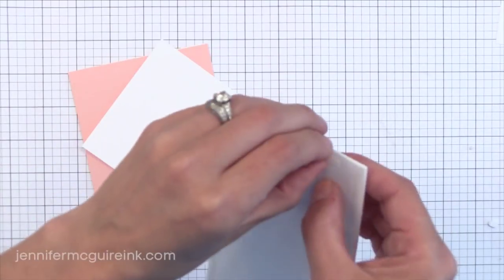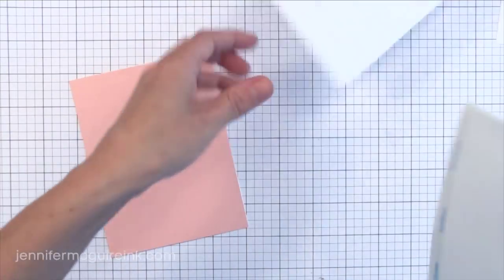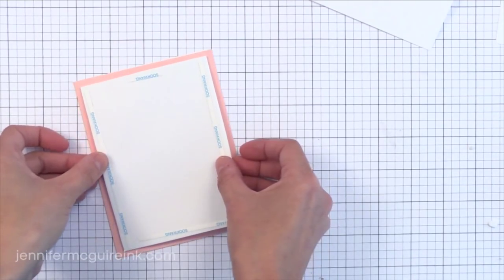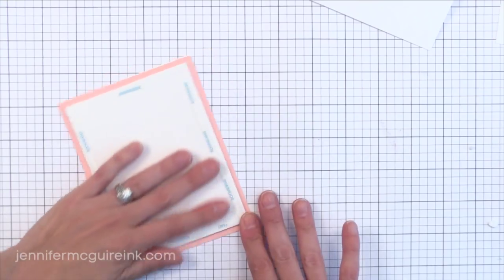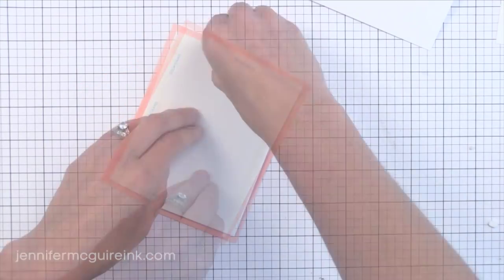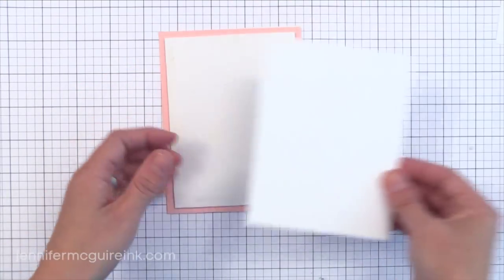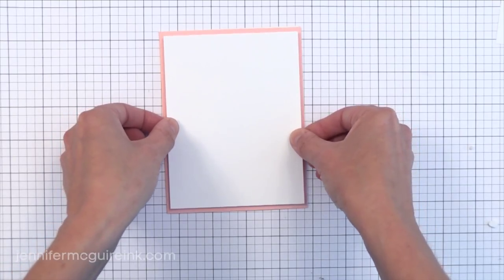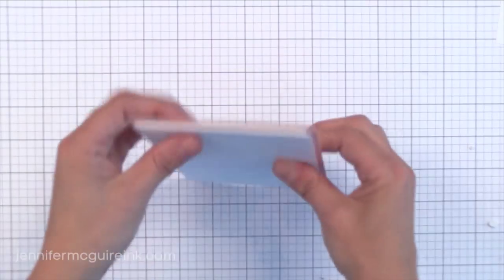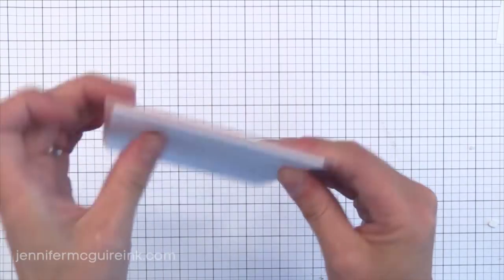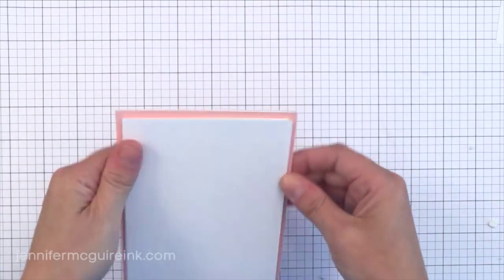Now if you're wondering about the craft foam that you can get with adhesive on one side already, I'll talk about that at the end of this video. So now I can just remove those little strips and put the white card stock on the front and this will hold nicely also. So I encourage you just to try whatever adhesive you may have. Chances are it will hold the craft foam in there just fine. And this card will go through the mail with no problem.